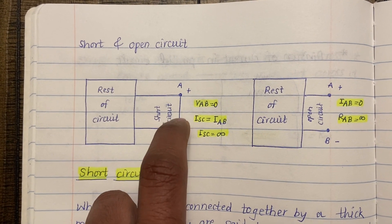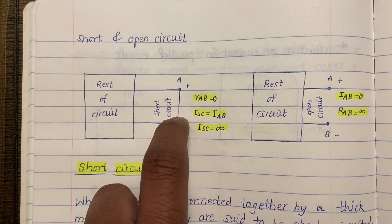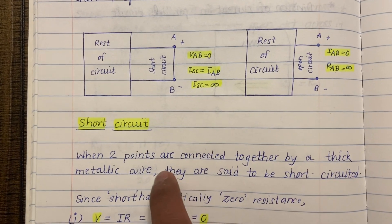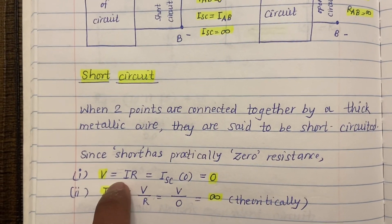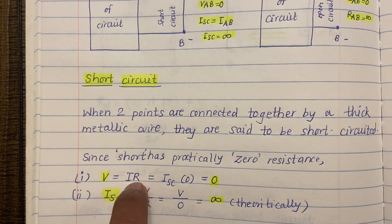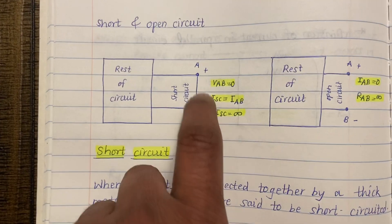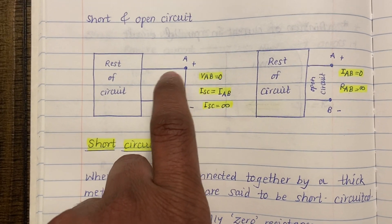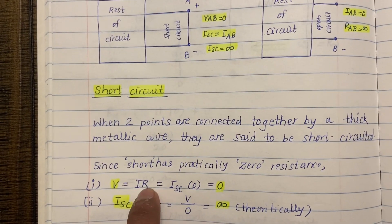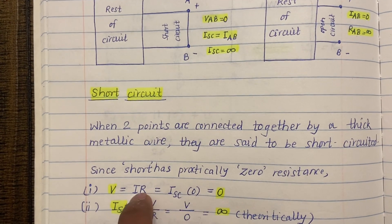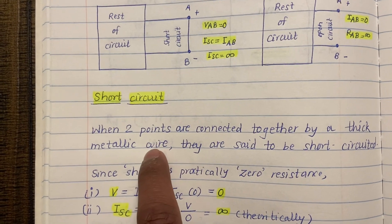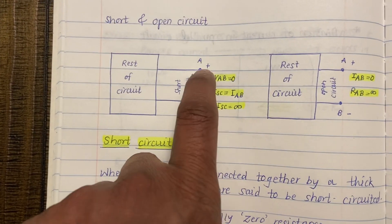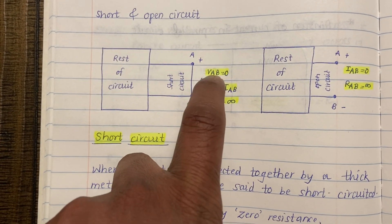Since the resistance of this metallic wire is practically zero, and since the thick metallic wire has practically zero resistance, we know by Ohm's law V = I × R. In this case I is ISC — meaning short circuit current or IAB, the current flowing from A to B. So V = ISC × 0, and because the resistance of the metallic wire is practically zero, voltage becomes zero. Voltage across these two points becomes VAB = 0.